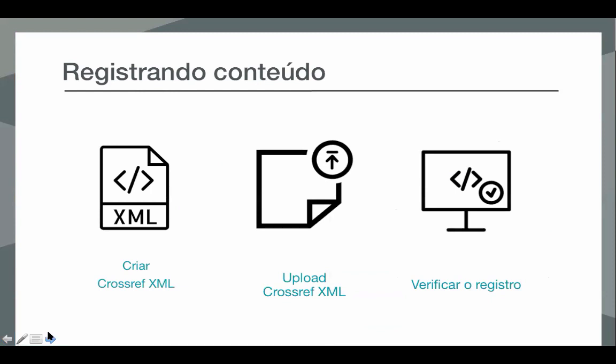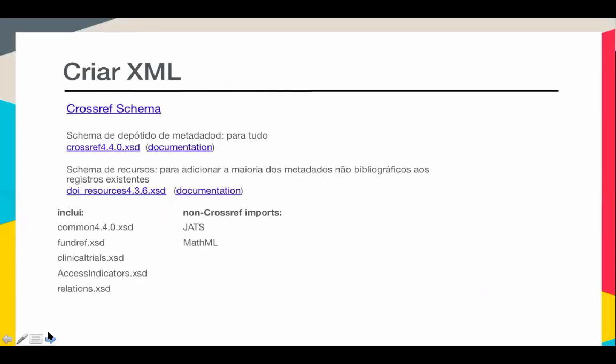Como que nós estamos registrando o nosso conteúdo? O conteúdo de depósito do Crossref é criado através de um XML no padrão Crossref. Esse conteúdo pode ser criado através de sistemas, ou no final da publicação, ou de algumas ferramentas nossas. Você nos envia o XML, nós o processamos, e você ou seus sistemas verifica se tudo está registrado. É tudo feito de forma automática: criar, fazer o upload e depois verificar o registro. Tudo que vem para o nosso sistema é basicamente em XML.